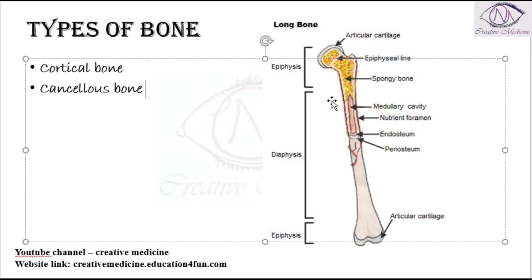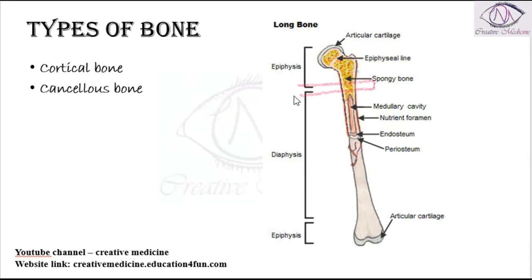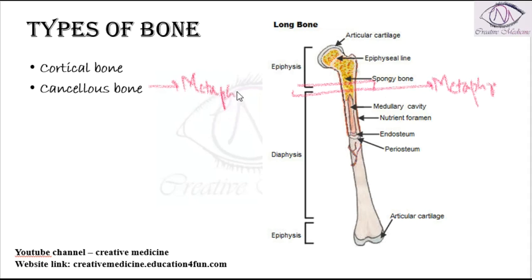Cortical bone is present mainly in the diaphysis, which is the shaft of the bone. The ends of the bone are called the epiphysis. Between the epiphysis and the diaphysis we have the metaphysis, and in the metaphysis, cancellous bone is present.